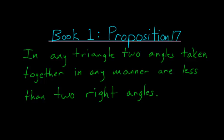For Book 1, Proposition number 17 of Euclid's Elements: In any triangle, two angles taken together in any manner are less than two right angles.